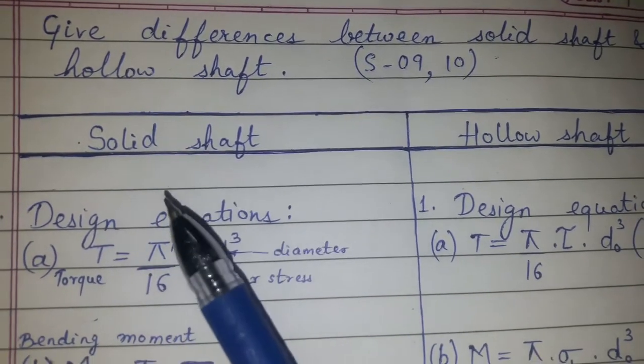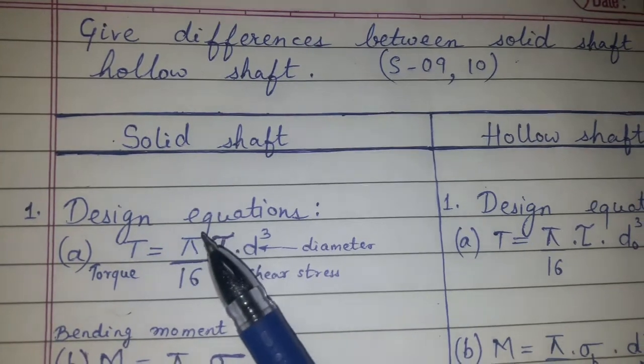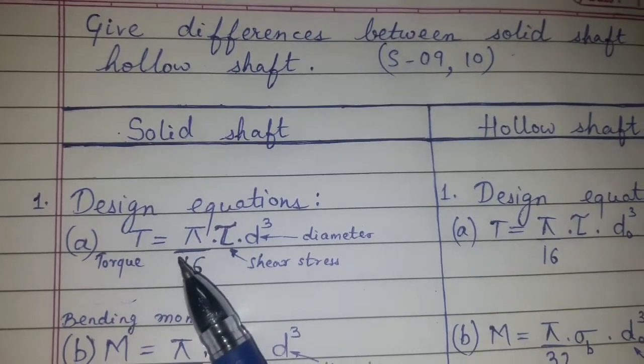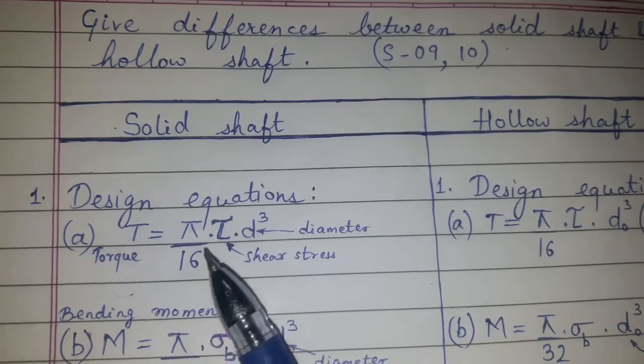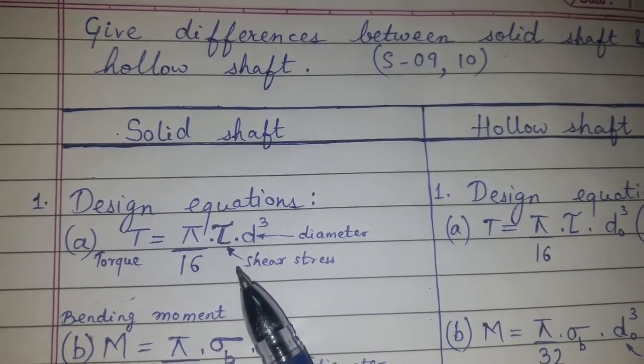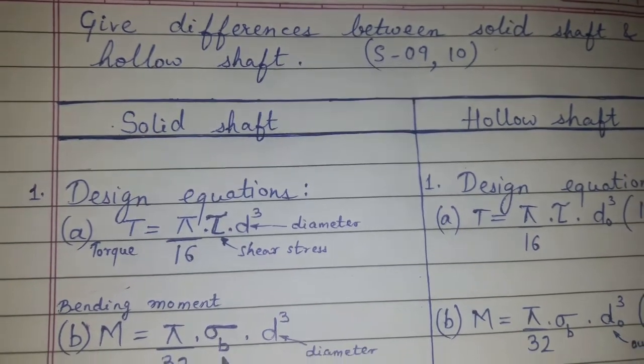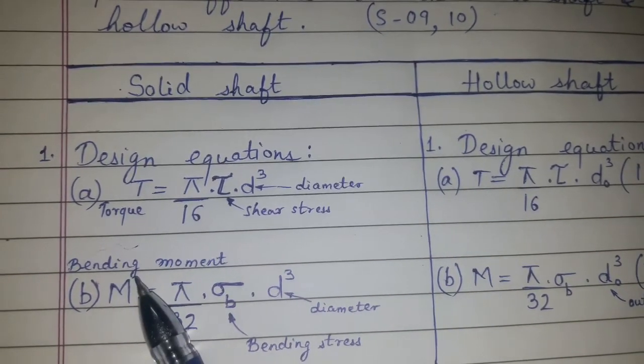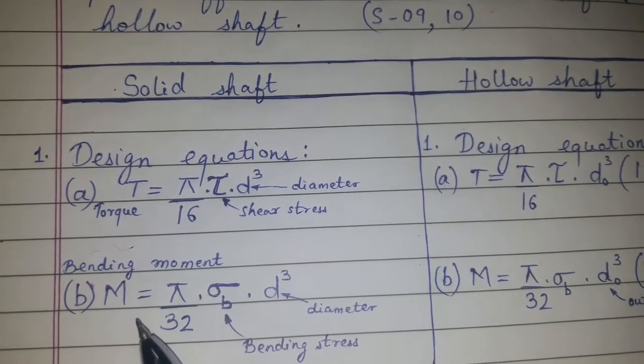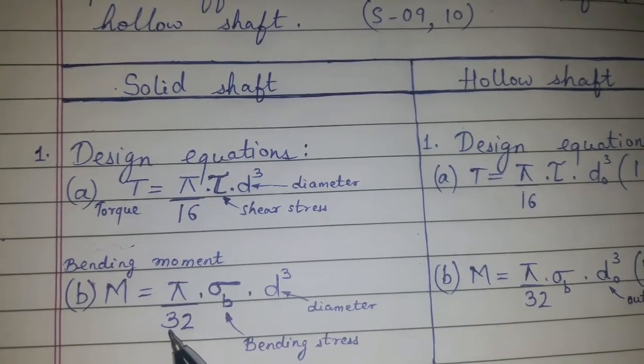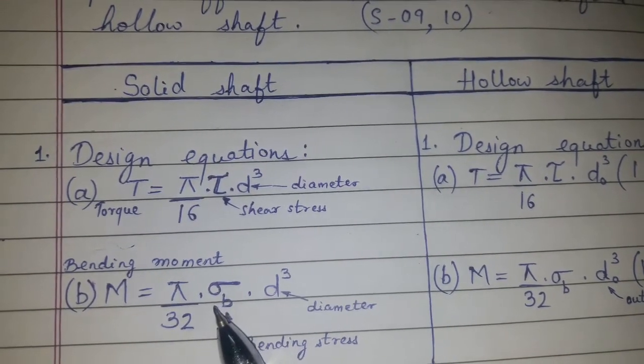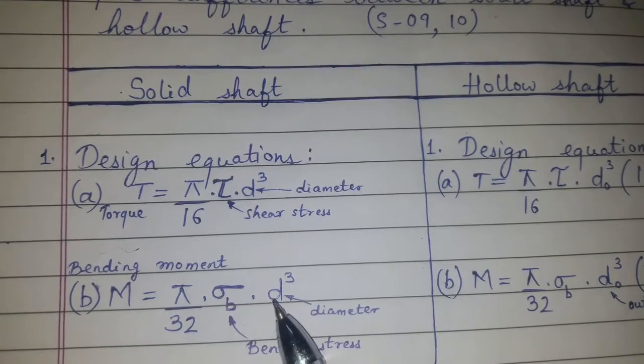Solid shaft. The design equation for the solid shaft is torque equal to pi by 16 into shear stress into diameter cube, and the bending moment for a solid shaft is equal to pi by 32 into bending stress into diameter cube.